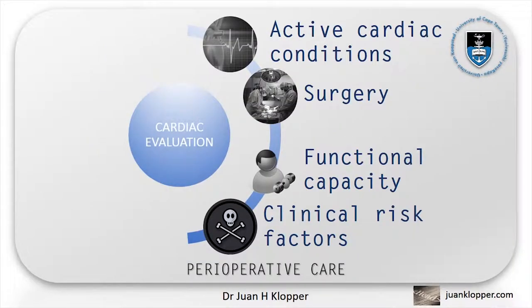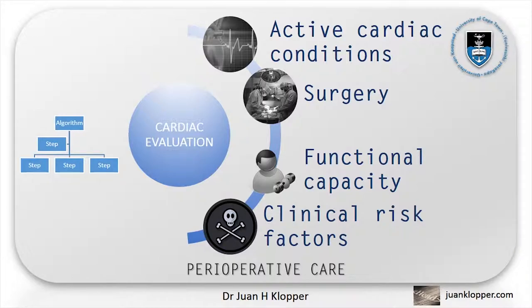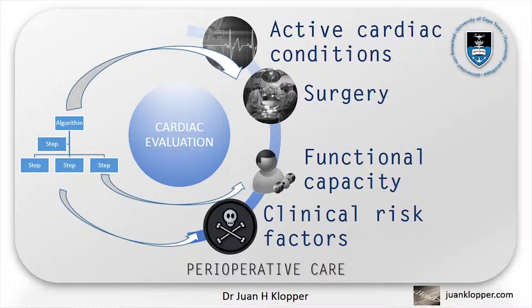The main section of this discussion will center on a slightly modified management algorithm suggested by the American College of Cardiology and American Heart Association which you may consider employing in your own setting. In order to follow along with this algorithm, some prerequisite knowledge is required. The algorithm makes mention, in order, of the following: critical cardiac conditions, the risk of different types of surgery, the functional or exercise capacity of the patient, and finally clinical risk factors. I'll briefly discuss how to manage the patient that has prior coronary artery balloon angioplasty or the placement of coronary stents. Before all of this, I will remind you of the American Society of Anesthesiologists or ASA class system of general patient health.